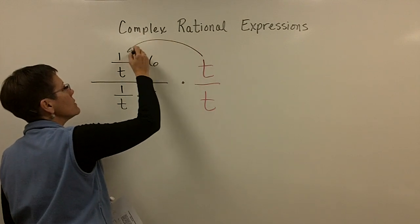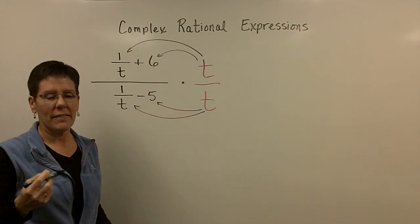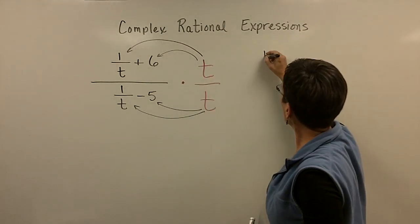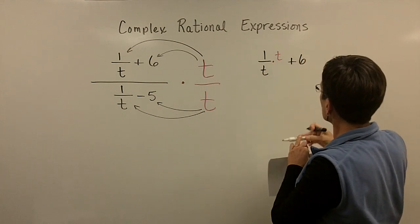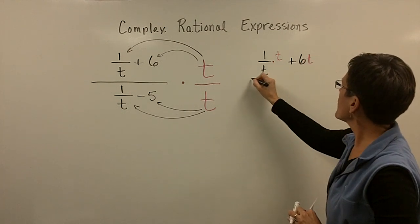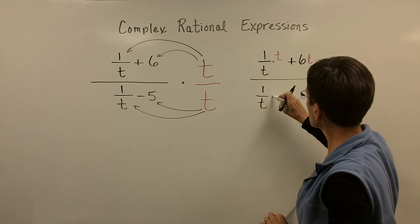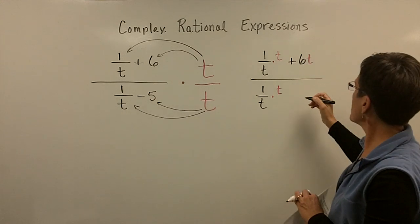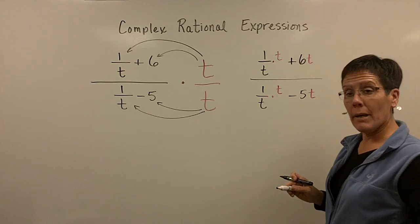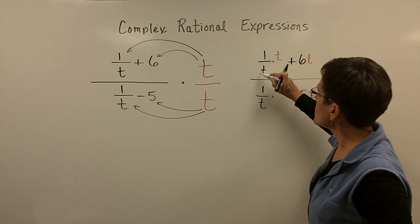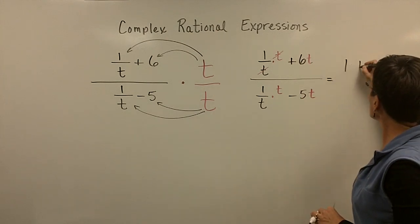This means that this t has got to be multiplied by that term and by that term, and this t has to be multiplied by that term and by that term. So let's write that down individually for each one. Over here, I have one over t multiplied by t, and I have six multiplied by t. Let's write the downstairs portion too: one over t gets multiplied by t, and five gets multiplied by t. When you multiply by the least common denominator, the denominators that contain fractions will be reduced — this t over that t will cancel out. So the first term is one and then you have six t.